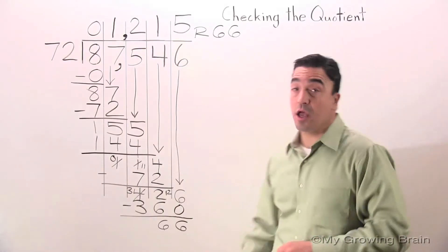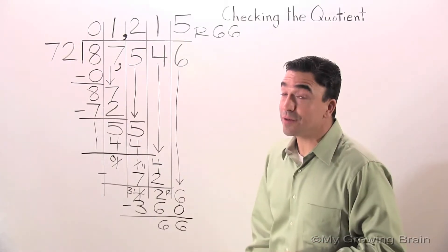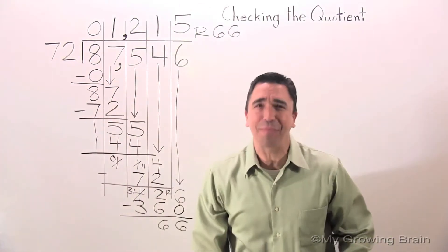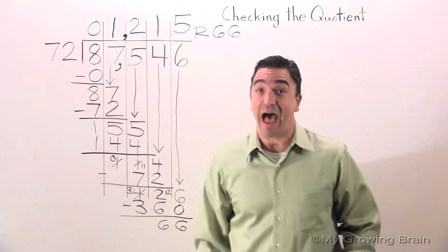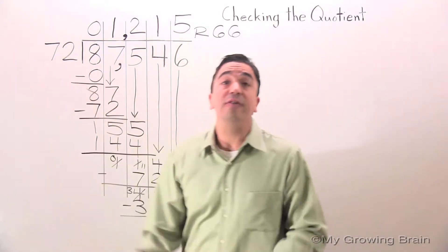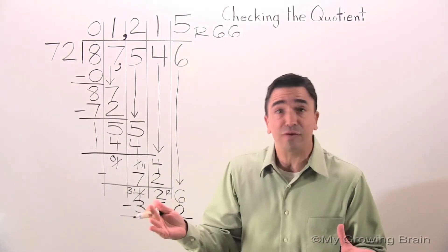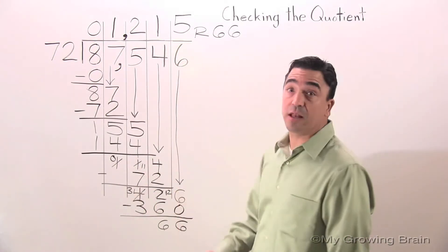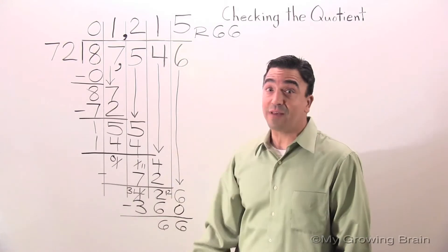Today's lesson is on checking the quotient. We're going to check the quotient on this big, bad division problem: 87,546 divided by 72. It gives us a quotient of 1,215 remainder 66.